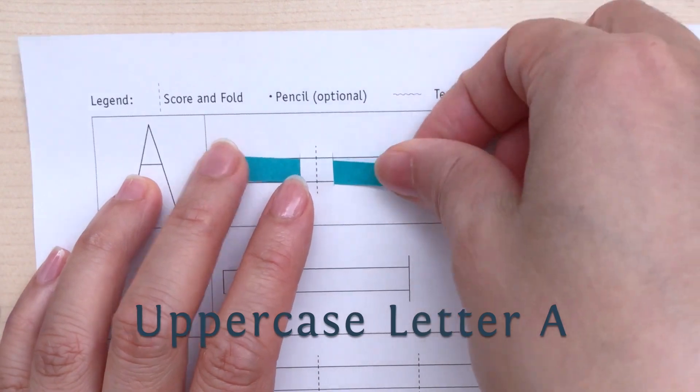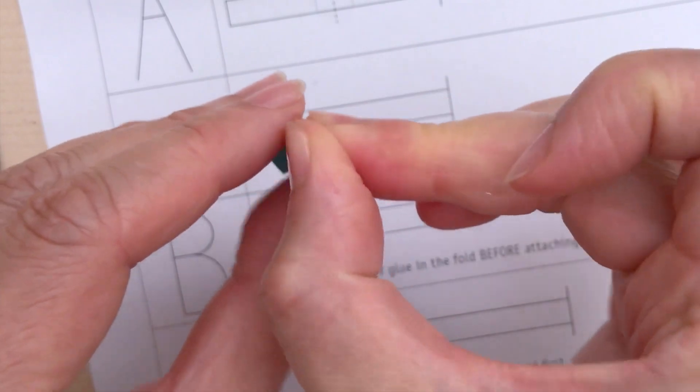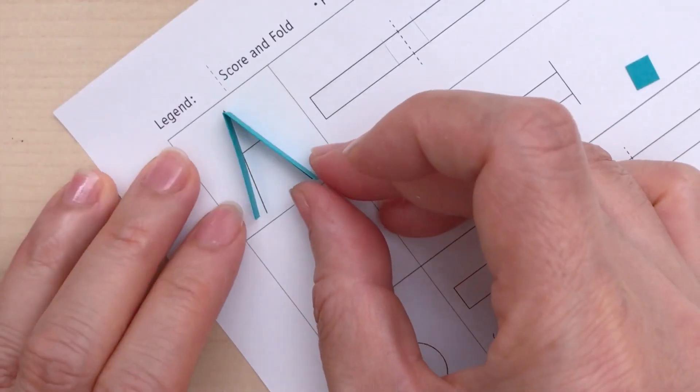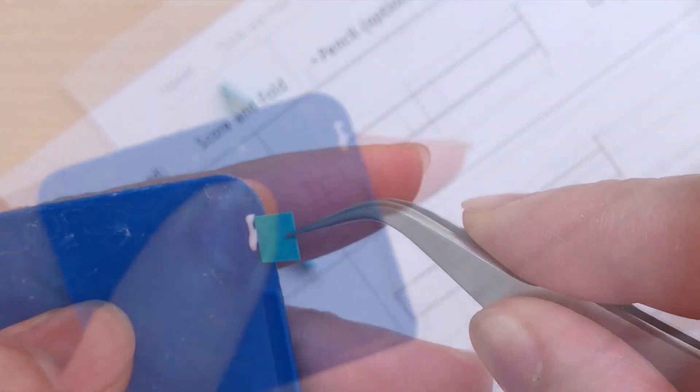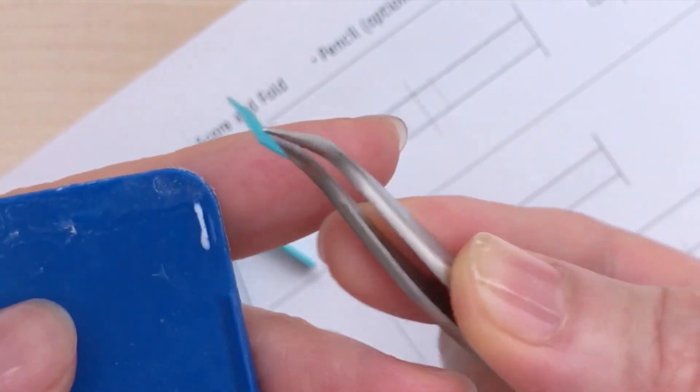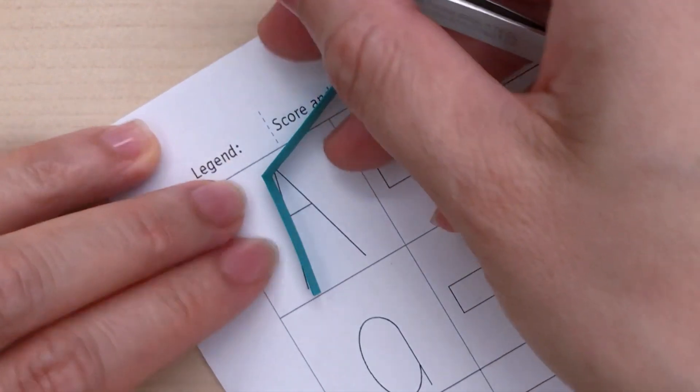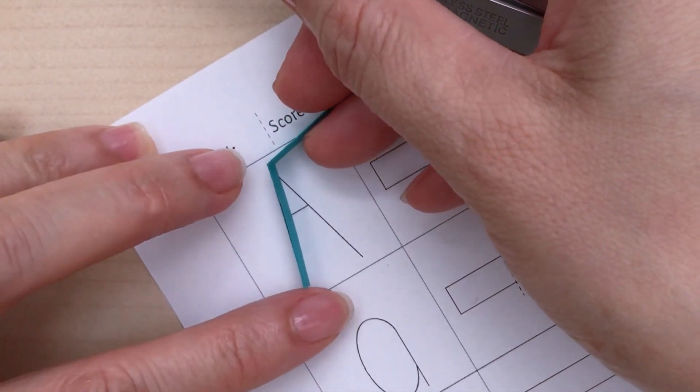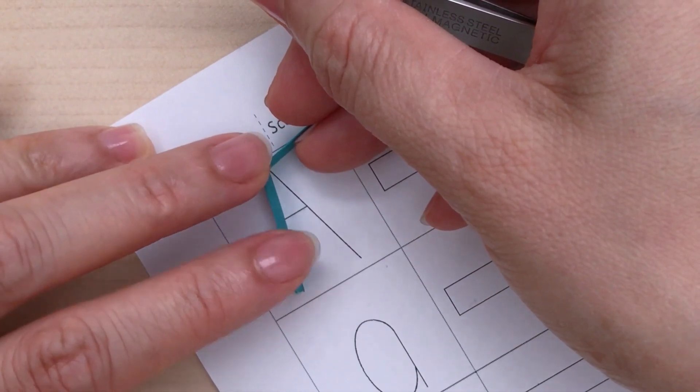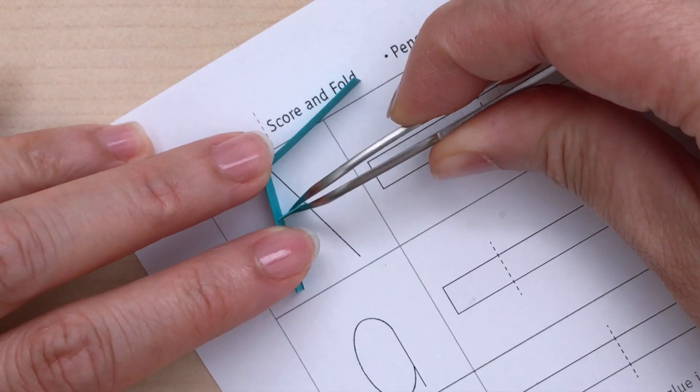For the uppercase letter A I'm going to take the first segment, fold along the score line and crease it sharply. Let's put it on the template for now and tackle the next strip. Let's dip the end of the next strip into the glue, just a small amount is enough. Let's move this part of the A out of the way for now. Okay let's realign the letter against the template. I'm going to place fingers gently on top of the letter to prevent it from moving. Now I can glue the smaller segment in place following the template.